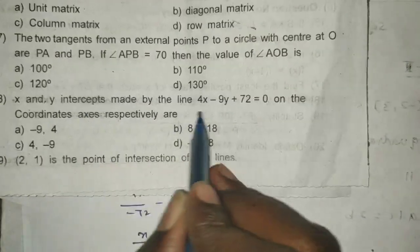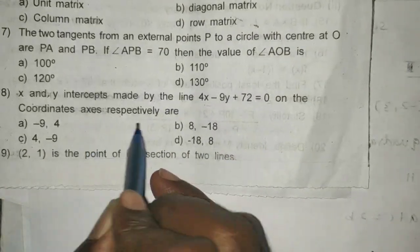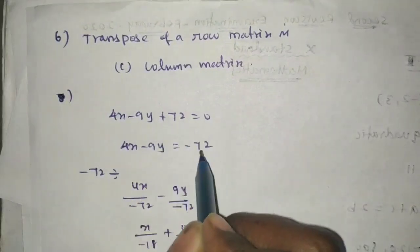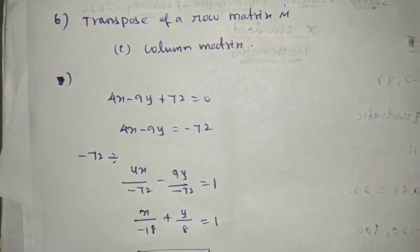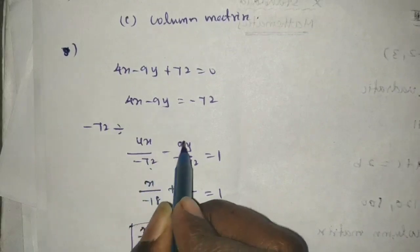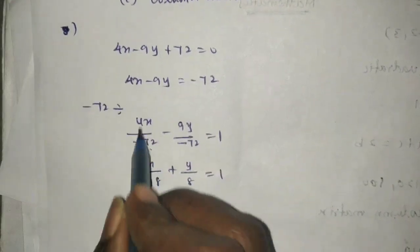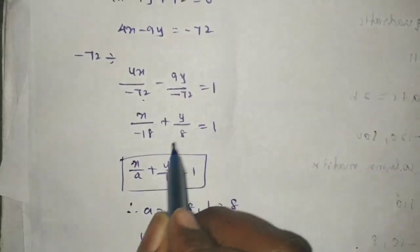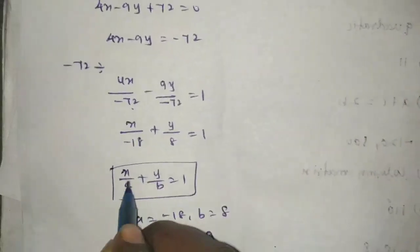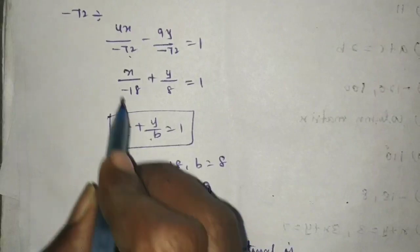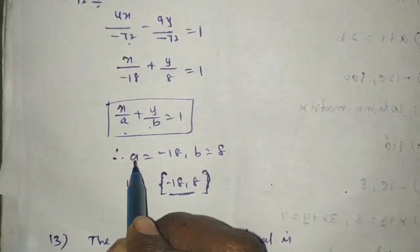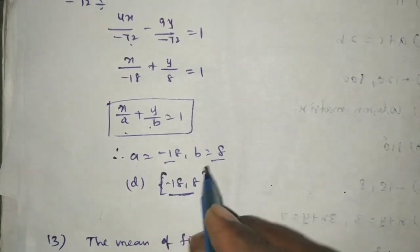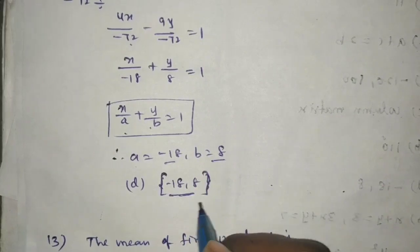Question 6: Find x and y intercepts. The equation is 4x minus 9y plus 72 equals 0. Move 72: 4x minus 9y equals minus 72. Divide by minus 72: 4x over minus 72 minus 9y over minus 72 equals 1, which simplifies to x over minus 18 plus y over 8 equals 1 (intercept form). So x-intercept is minus 18, y-intercept is 8. Answer is D option.